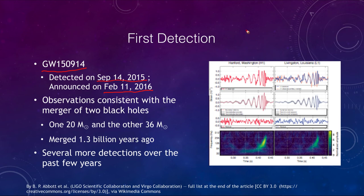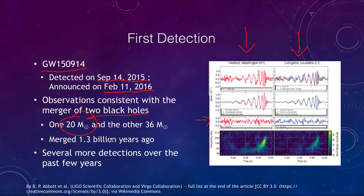The signal was seen at the Hanford, Washington observatory and at the Livingston, Louisiana observatory. When looked at together, they show essentially the same signals. When we subtract the theoretical signal from the observed signal, we find a match with two black holes merging together — one of them being 36 solar masses and the other about 20 solar masses. When we subtract the model from the observation, no patterns are left behind.